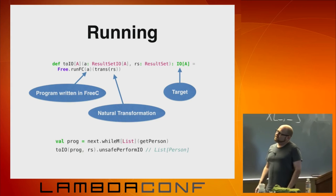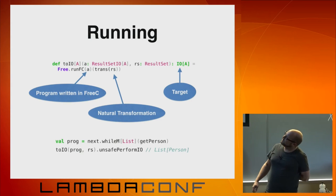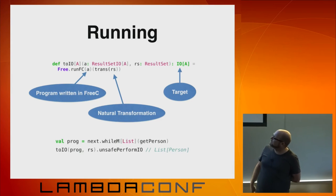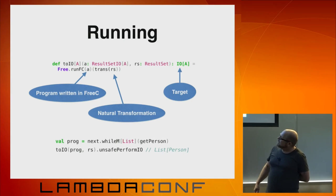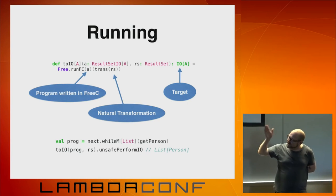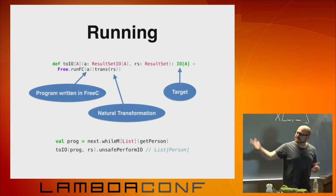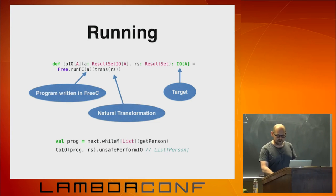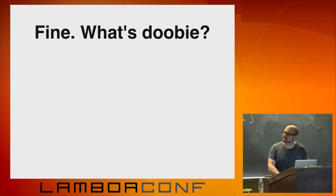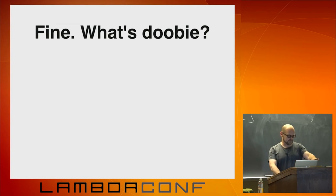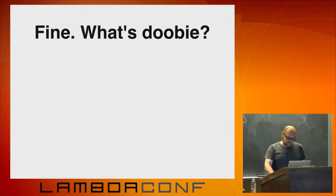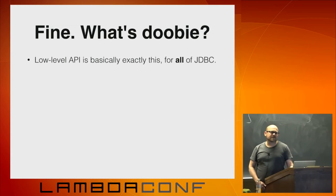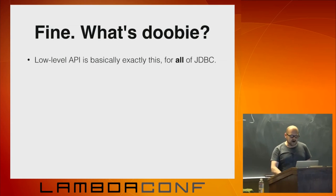If we have the program we looked at before — this one accumulates into a list instead of a vector but it's the same thing — if we call toIO and give it the program and a result set, then unsafePerformIO, we actually get a regular Scala List[Person]. So what is Doobie then? We've gone this far and I'm running out of time without even talking about Doobie. Doobie is basically what you just saw, but for all of JDBC.